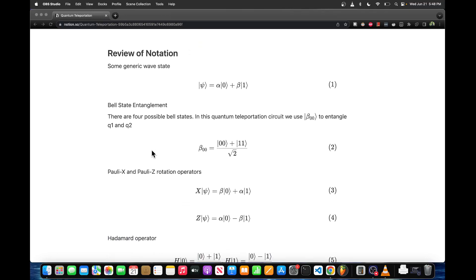Just a little bit of review of notation and definitions. If we have some generic wave function state, we can write it in bracket notation as ket psi equals alpha ket 0 plus beta ket 1, where 0 and 1 are the basis states.